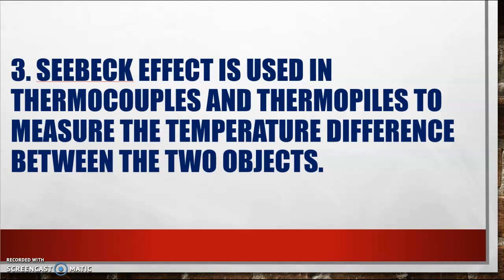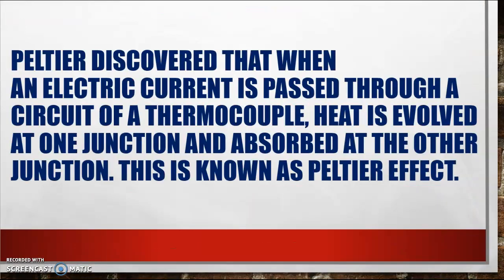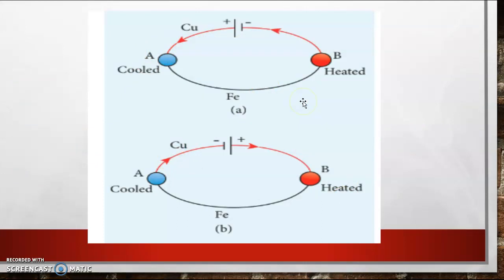Now let's continue with Peltier's effect. Peltier discovered that when an electric current is passed through a circuit of a thermocouple, heat is evolved at one junction and it is absorbed at the other junction. This is known as Peltier's effect. The two junctions A and B are maintained at two different points and a potential difference is introduced. As a result, heat is evolved at one junction and heat is absorbed at the other. From this, we can notice that Peltier's effect is contradictory to Seebeck's effect, because in Seebeck's effect we provide heat to produce potential difference, whereas in Peltier's effect we introduce potential difference in order to produce heat.